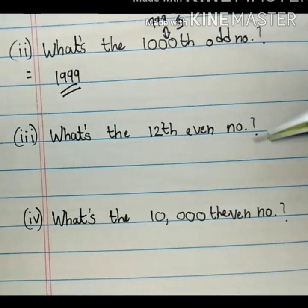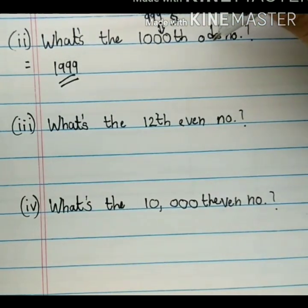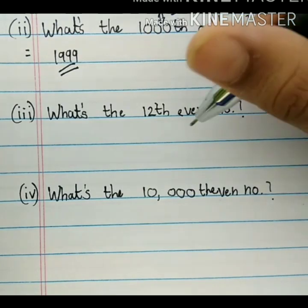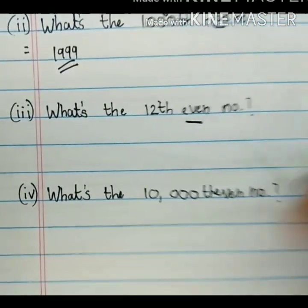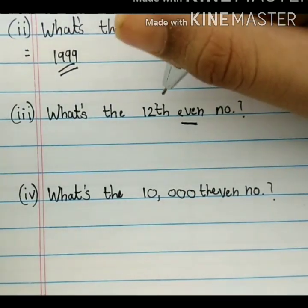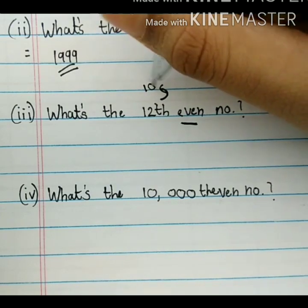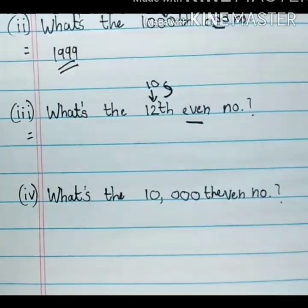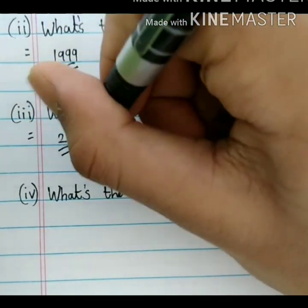The next question says: what's the 12th even number? Till now we have been finding odd numbers, but now there is a change — it's an even number. If you have to find the 12th even number, you have to subtract 2 from 12, that gives us 10, and add 10 to 12, which totally gives you 22.